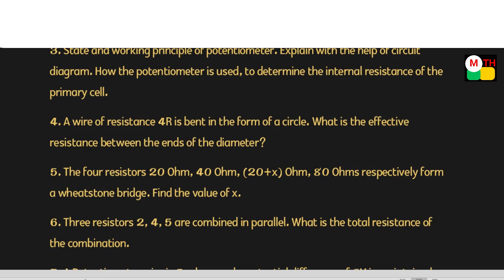This is the fifth unit. The options are 20 ohms, 40 ohms, 20 plus x, and 80 ohms. 4 ohms is the same. Wheatstone bridge x value. We upload these sums.